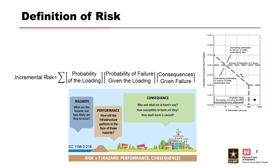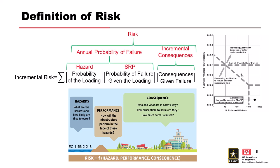The next element is performance: the probability of failure given that load occurs — the system response probability. Given the hazard occurs, what's the probability the dam or levee fails? Combined, those two terms give us the annual probability of failure. Couple that with consequences — how many people would die, what economic damages occur, what environmental impact — and you have risk as the product of all three terms.